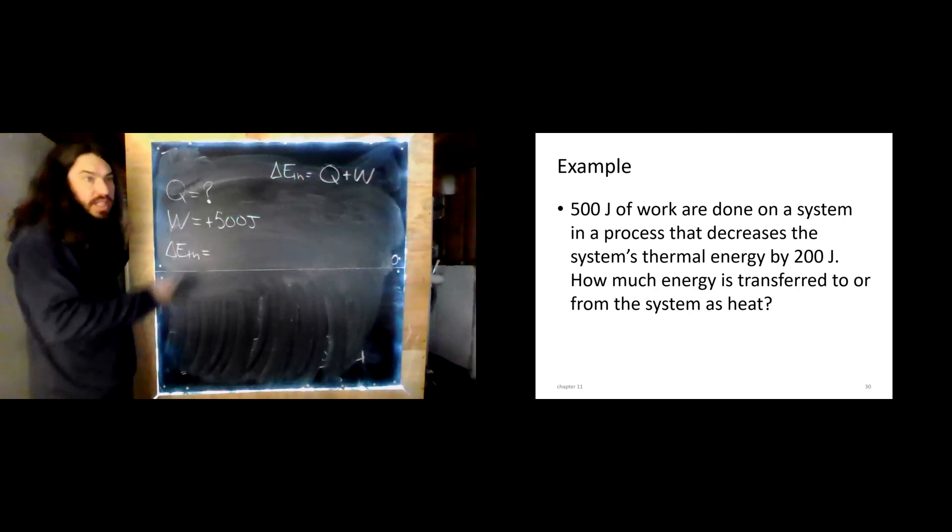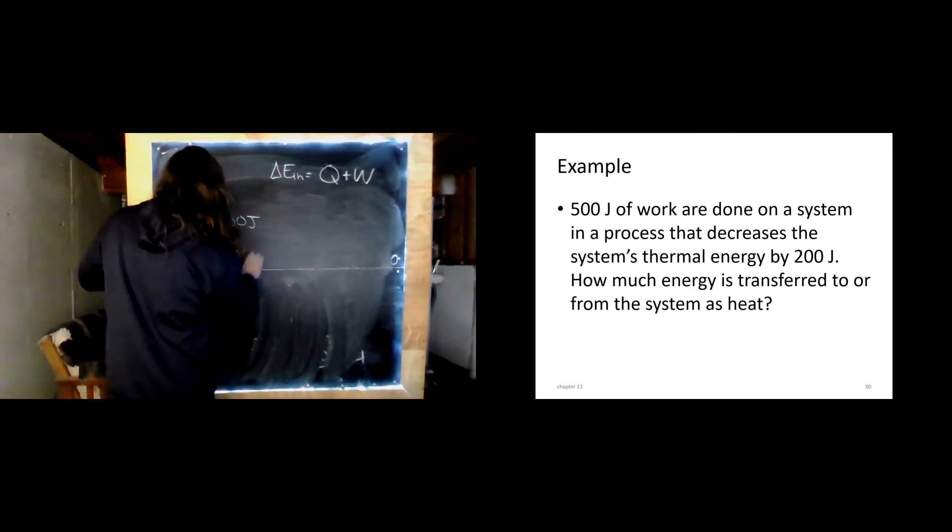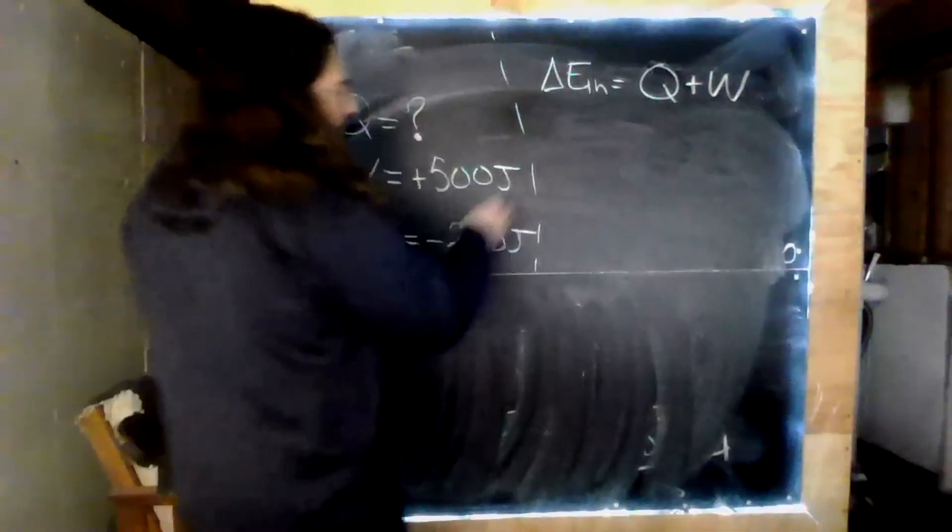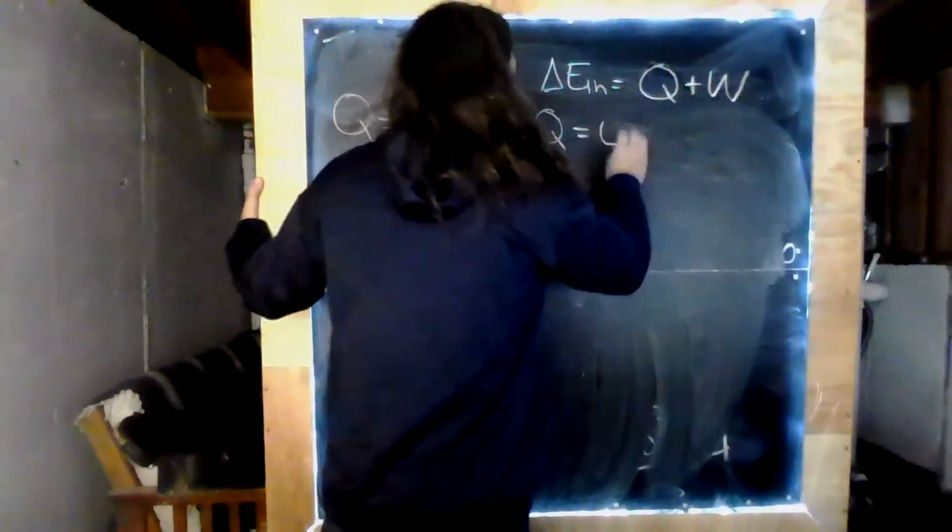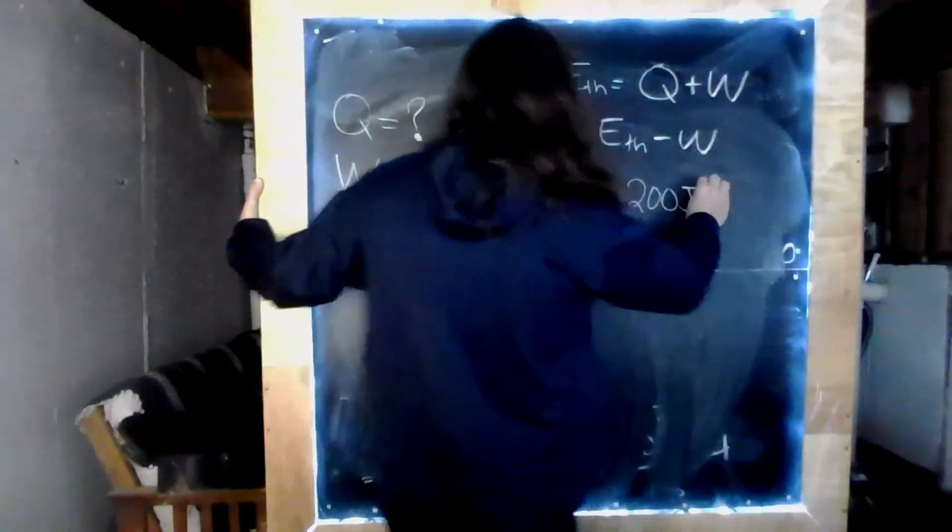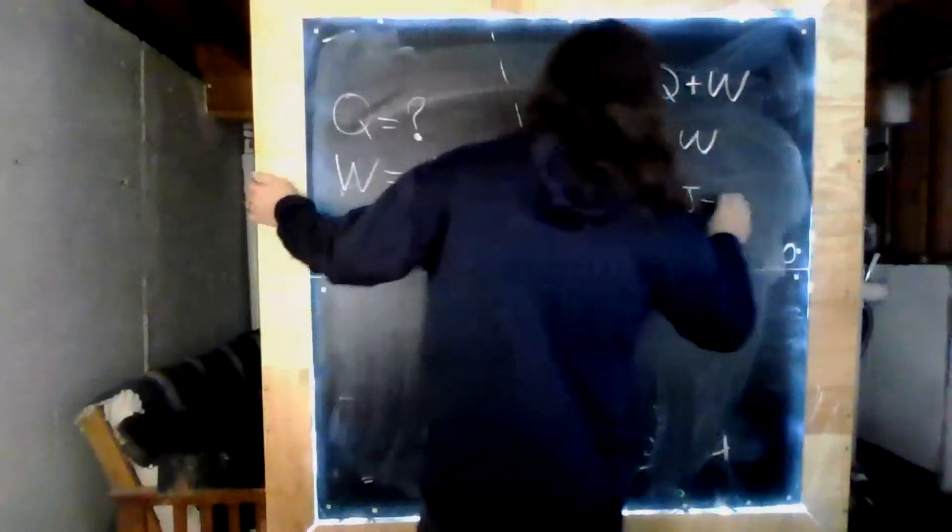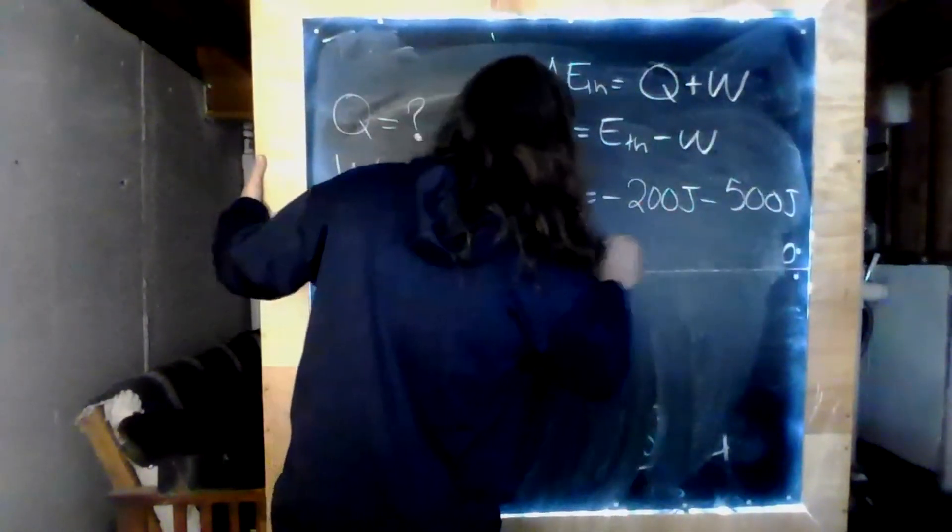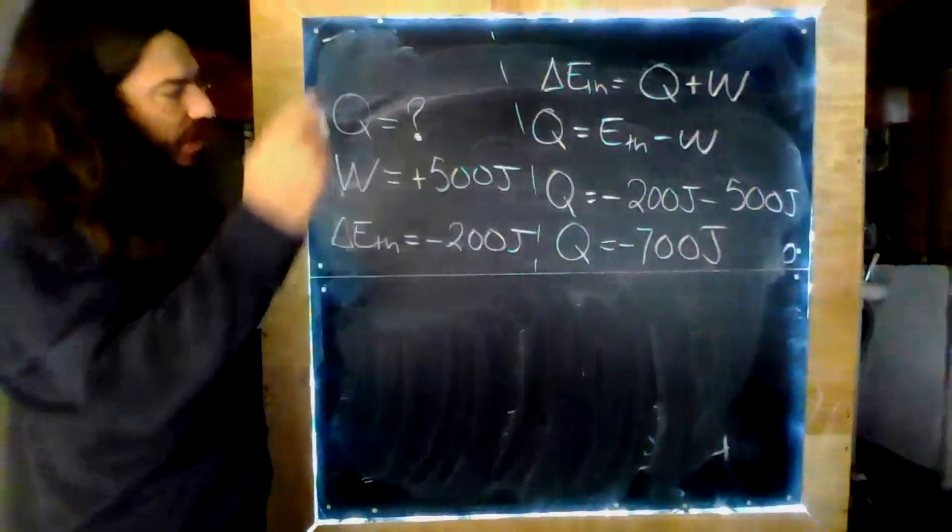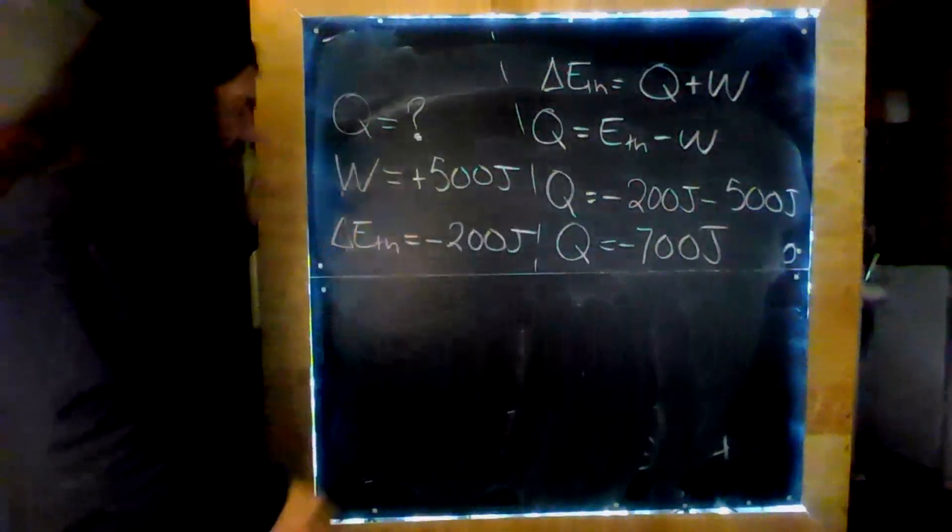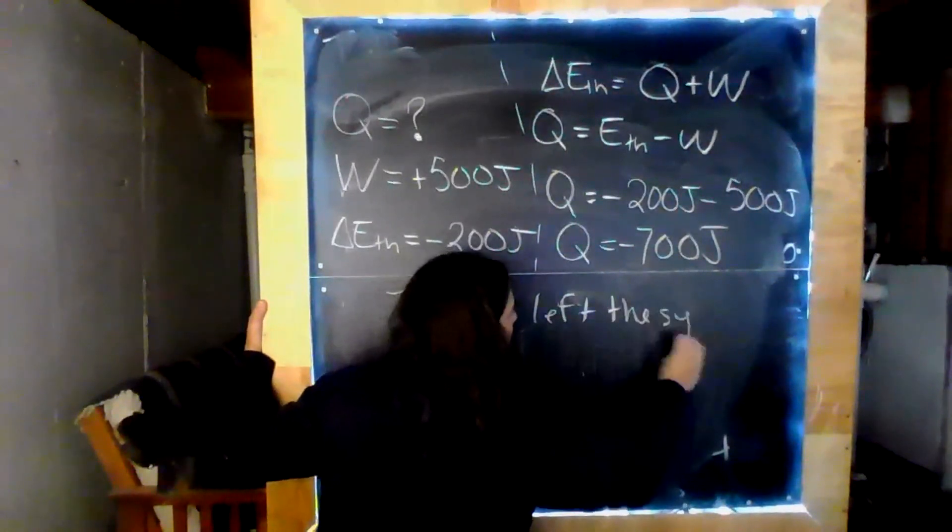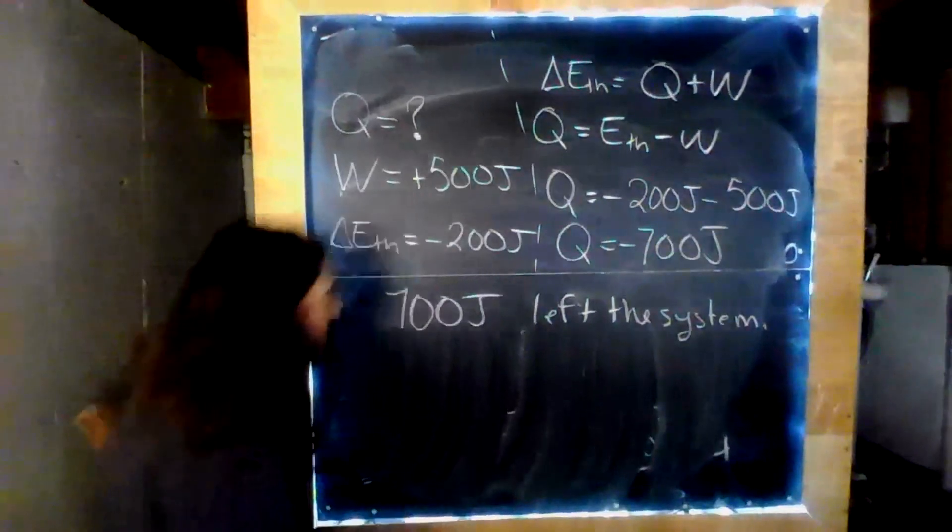And it decreases the thermal energy by 200 joules. This one's usually pretty straightforward. Decreased is negative. So now that we've gotten our numbers and our signs straight, we know we're solving for Q. So we can write Q equals E thermal minus W. So that is negative 200 joules minus 500 joules. And so we end up with Q equals negative 700 joules. So let's interpret that. Negative means heat is leaving the system. And so we should say 700 joules left. That is our answer.